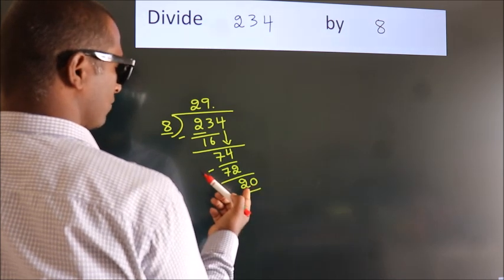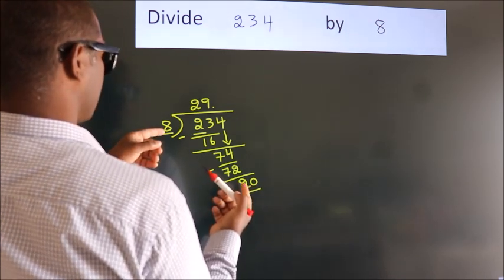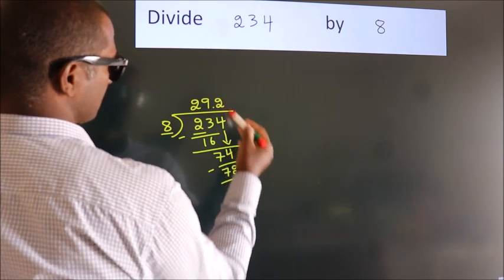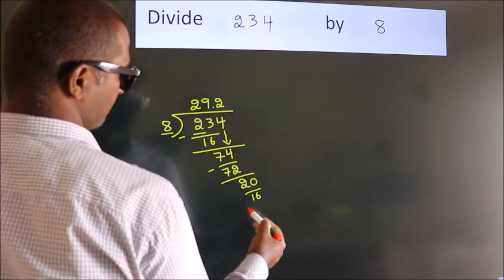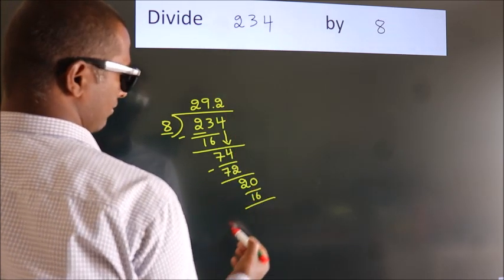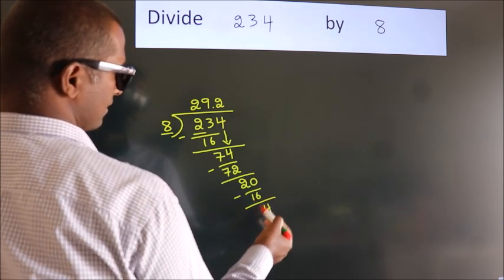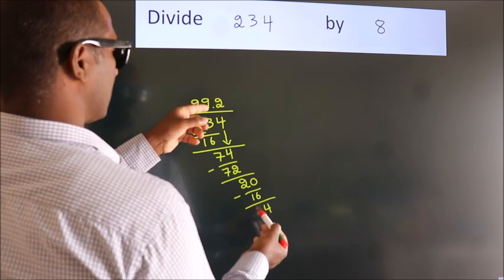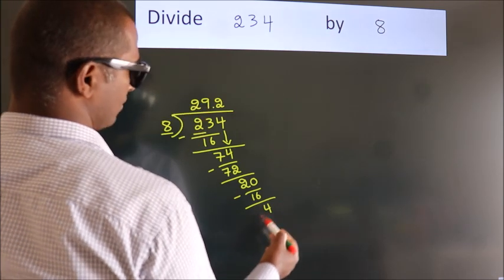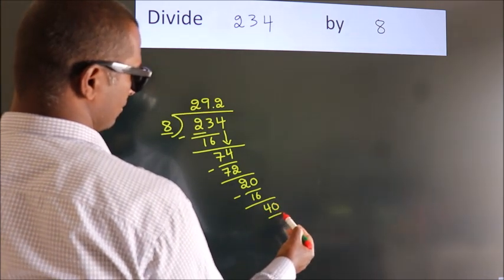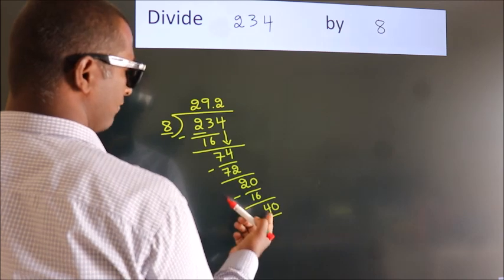A number close to 20 in the 8 table is 8 twos, 16. Now we subtract. We get 4. After this, we already have the decimal, so directly take 0. So, 40. When do we get 40?